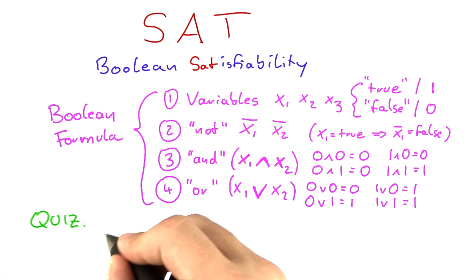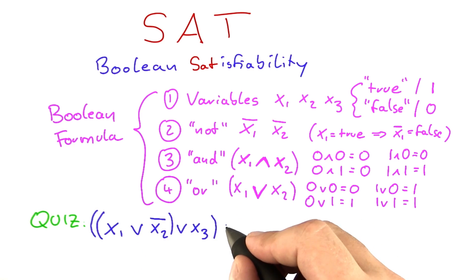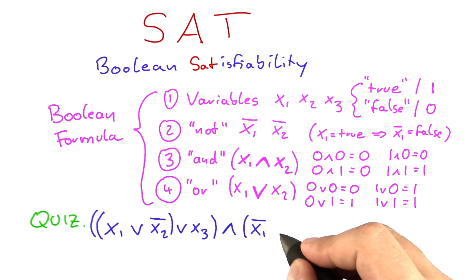Let's say you have the following Boolean formula: x1 or not x2 or x3, and, not x1 or x2.